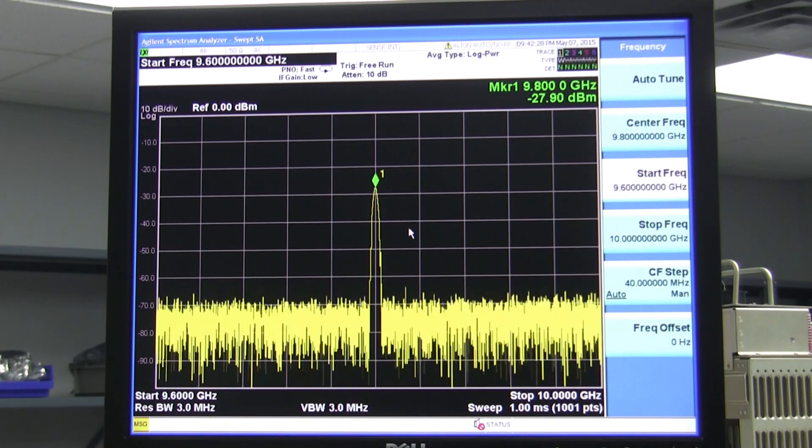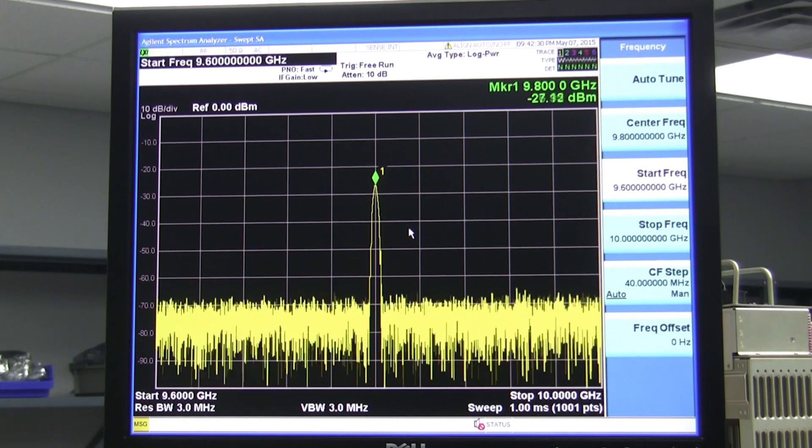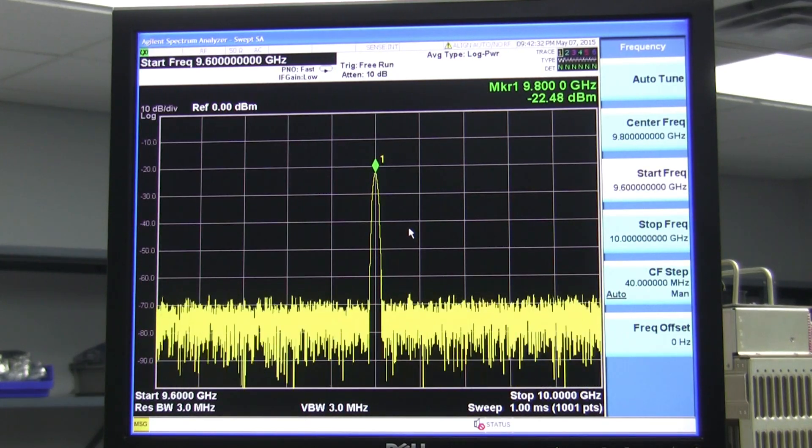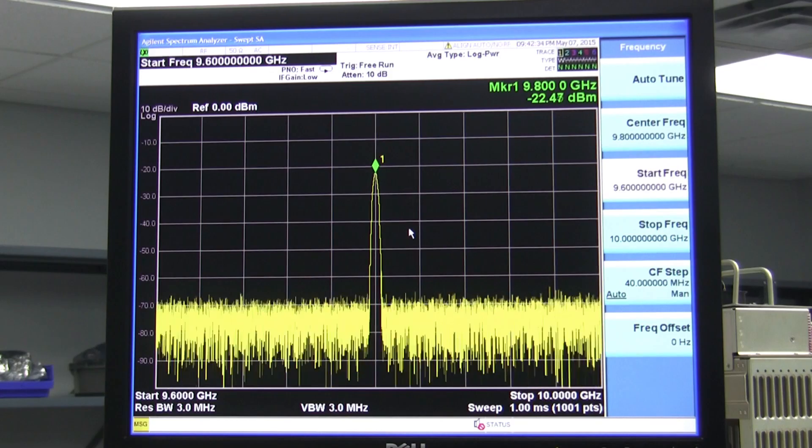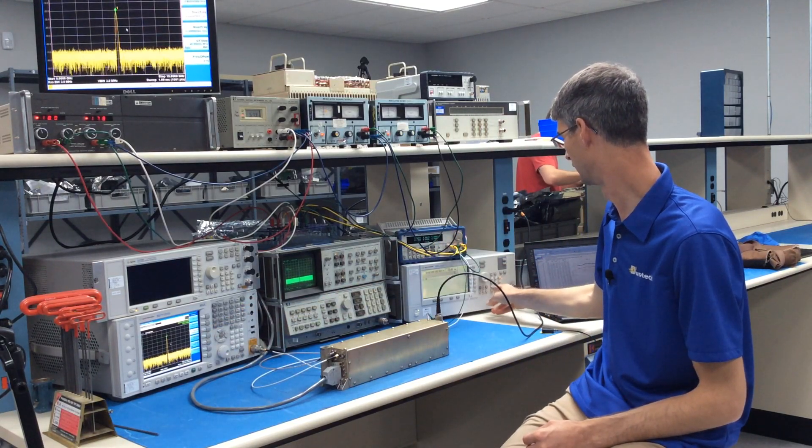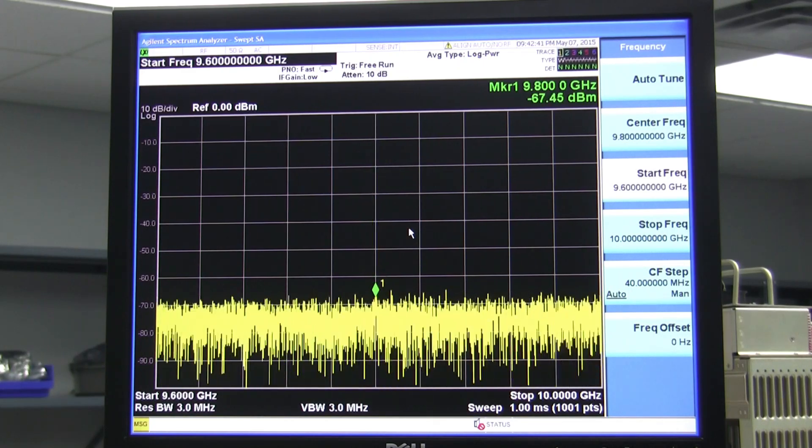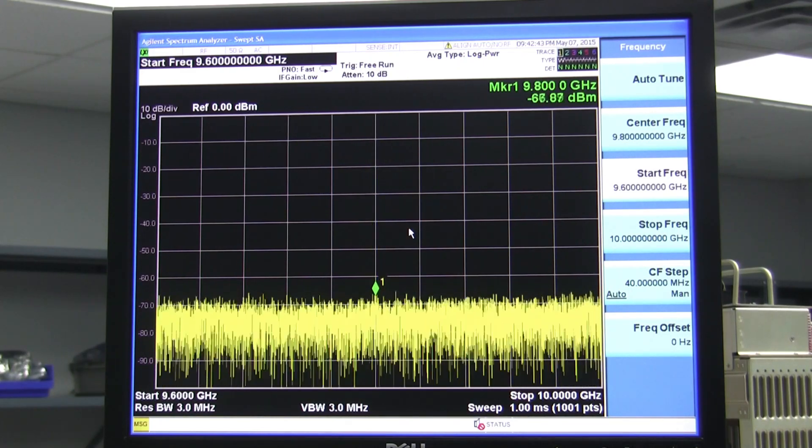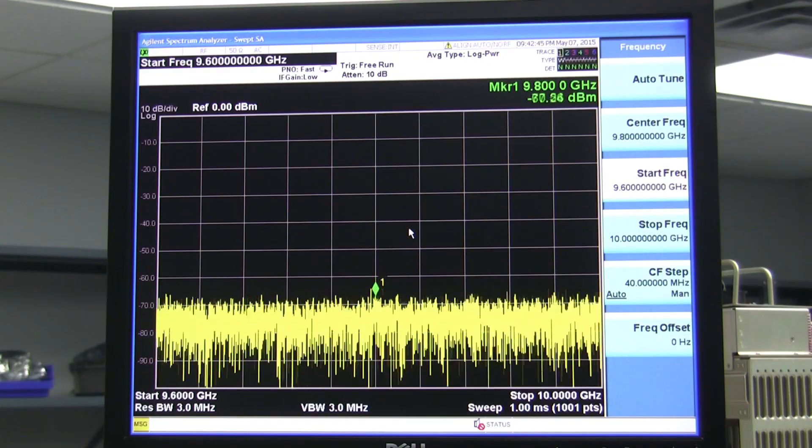If I change the input power of my system, I can see the resultant change in power on the spectrum analyzer. At very low input powers, however, the spectrum analyzer becomes very difficult to read because it's so far down into the noise.